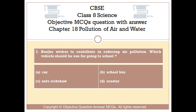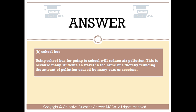Question number 3. Buiho wishes to contribute in reducing air pollution. Which vehicle should he use for going to school? Option A: Car. Option B: School bus. Option C: Auto rickshaw. Option D: Scooter. The right answer is Option B — School bus. Using a school bus for going to school will reduce air pollution. This is because many students can travel in the same bus, thereby reducing the amount of pollution caused by many cars or scooters.